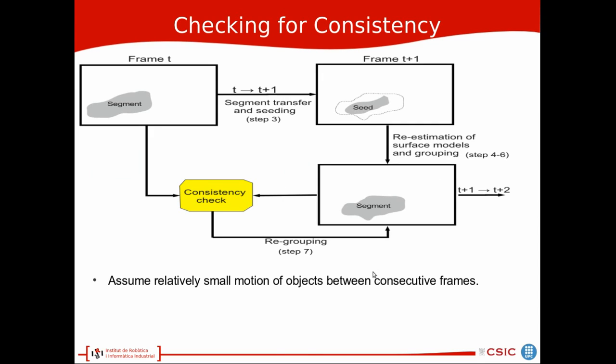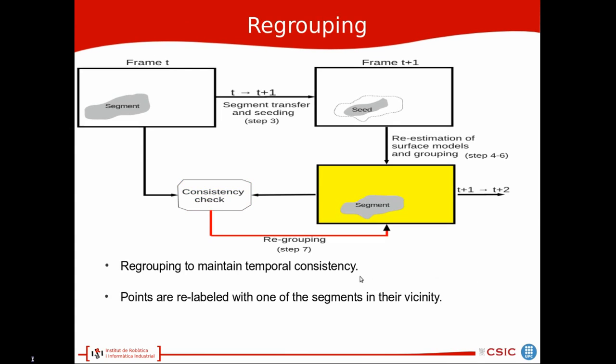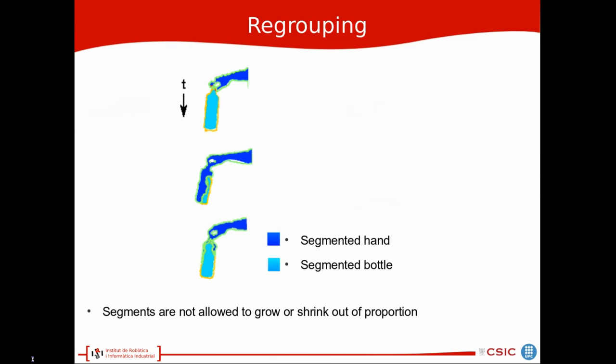We assume relatively small motion of objects between consecutive frames. So object cannot grow or shrink out of proportion from one frame to next. And if this happens we assume that there has been false assignment and we need to perform regrouping to maintain temporal consistency. For regrouping we relabel the points with one of the segments in their vicinity.